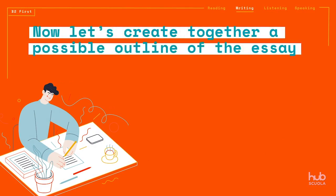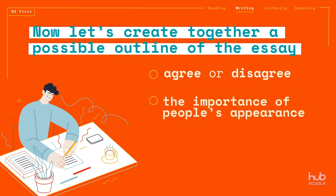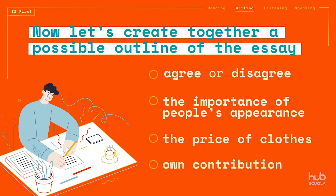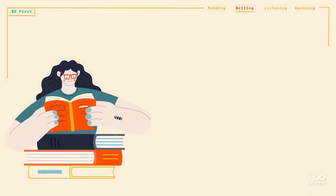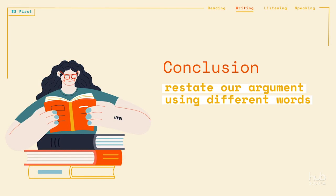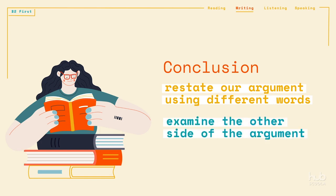Now let's create together a possible outline of the essay. We begin by deciding if we agree or disagree with the statement. Next, we defend our opinion using the first prompt — the importance of people's appearance. Then we continue to the next prompt — the price of clothes. Now we can add our own contribution to the topic. Finally, we create a conclusion. In the conclusion, we restate our argument using different words. We can also take this opportunity to examine the other side of the argument.